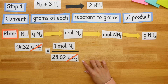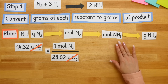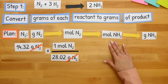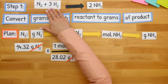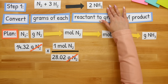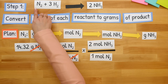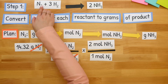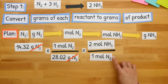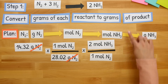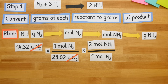Now that our grams of N2 have canceled, we are on our next step: going from moles of N2 to moles of NH3. Since we're going from moles of one compound to moles of a completely different compound, we have to use our balanced equation. We'll pull this mole-to-mole ratio from the coefficients in front of our compounds. We'll align moles of N2 across from each other — if there is no number in front of N2, assume there is a one. Then I'll go to moles of NH3, and we have two moles of NH3 from our balanced equation. Our moles of N2 will then cancel.